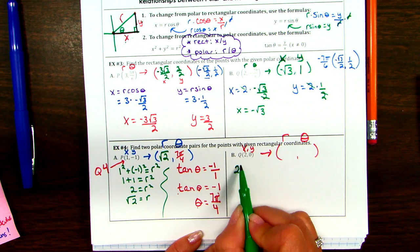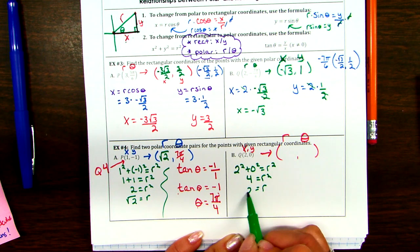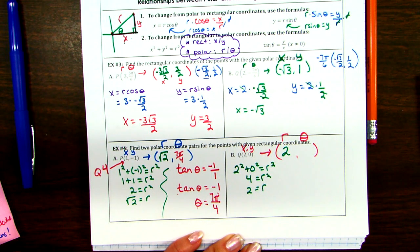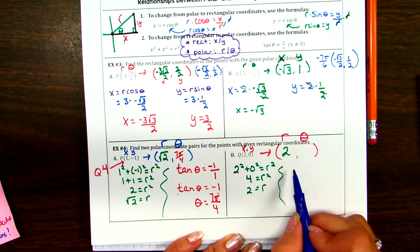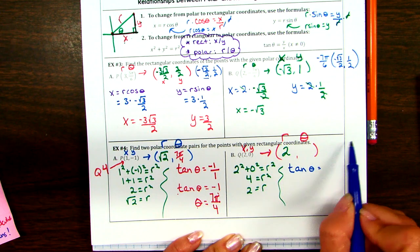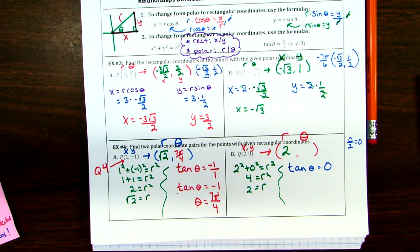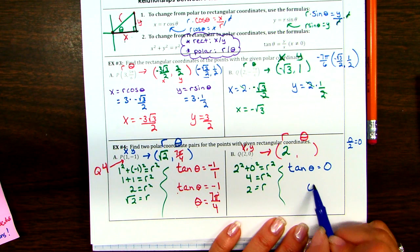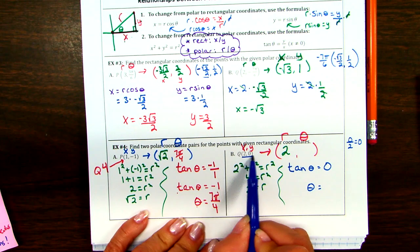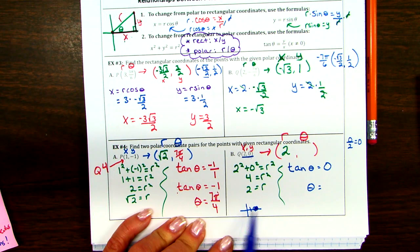X squared plus y squared equals r squared. And then tan theta equals y over x — that's 0 over 2. Let me go right to 0: tan theta equals 0. So the question is where is tan equal to 0? Without thinking too hard about the unit circle, use what we know about this point: (2, 0) is right here. What angle is in that same place? 0, or 0 pi — you can write either one.